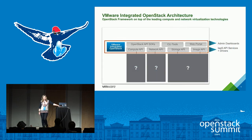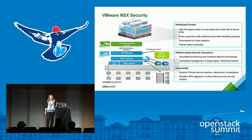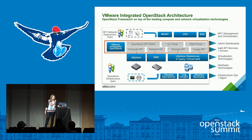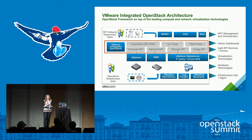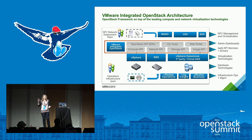VMware has implemented vanilla OpenStack on top of the ESX hypervisor, because OpenStack doesn't really care about the hypervisor — it just needs it as a functional component. All of the APIs, northbound interfaces, and even the Horizon dashboard are identical to what you know, with a few VMware logos thrown in. The advantage is that we get to use all existing VMware tools for management, monitoring, telemetry, fault tolerance, dynamic resource scheduling, and more, on top of your OpenStack build.